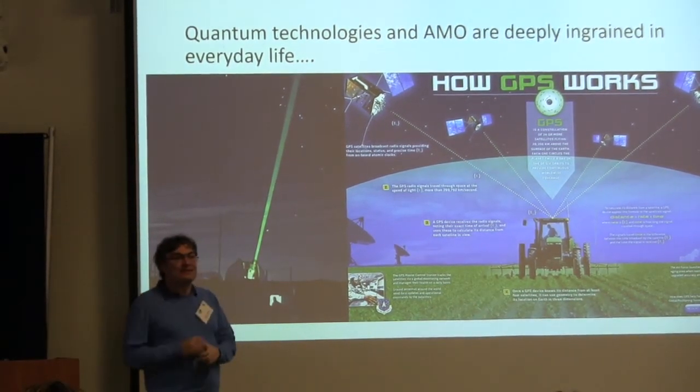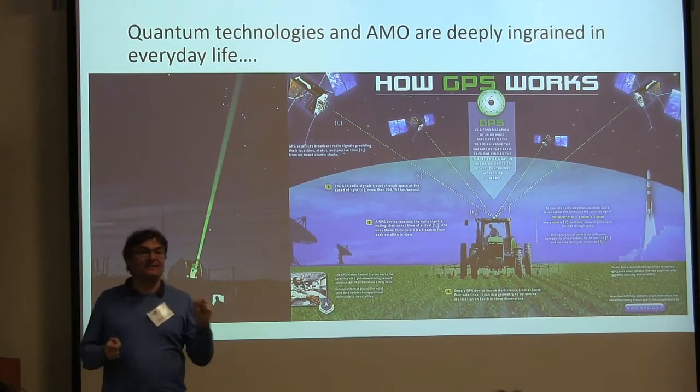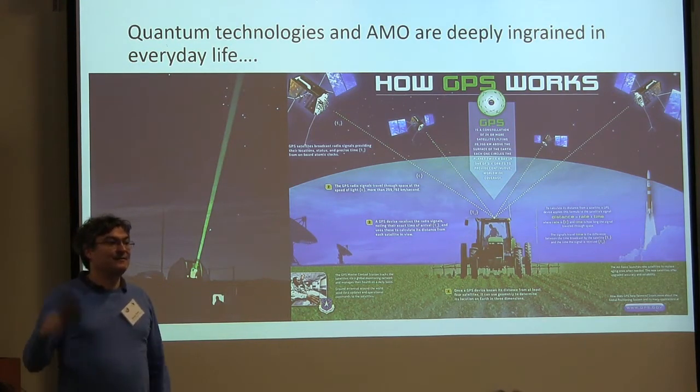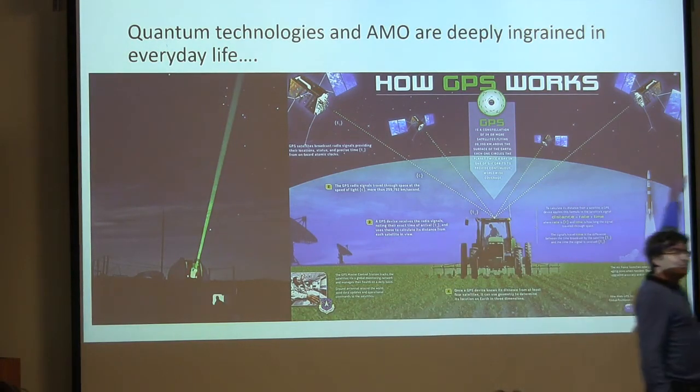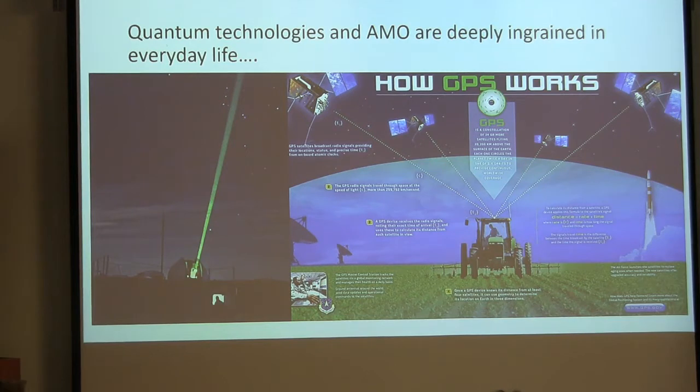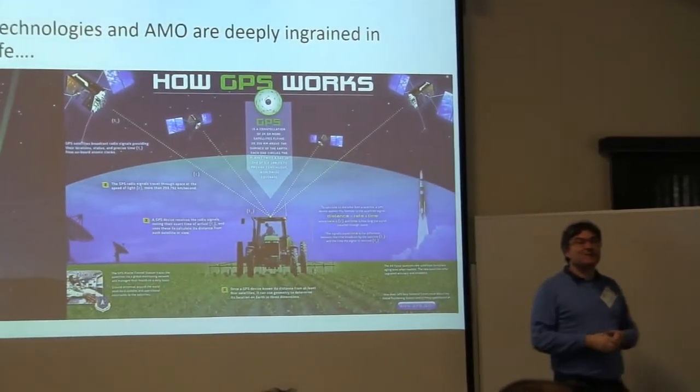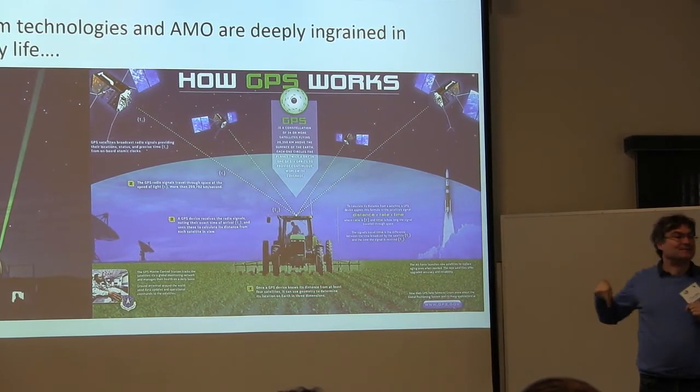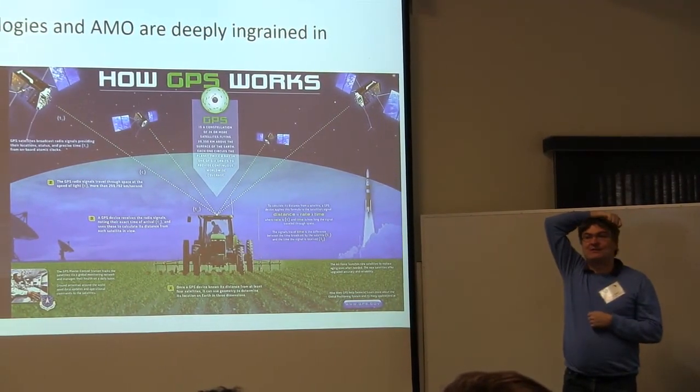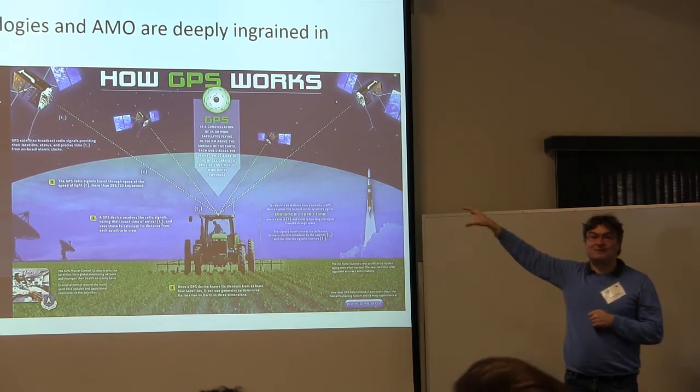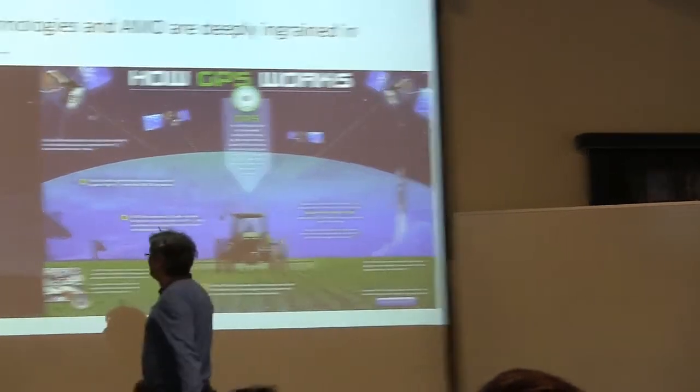There is a proliferation of atomic clocks that are so precise you can triangulate your position at the speed of light using GPS. Your cell phone does it. Everybody uses it all the time, and we're not even thinking that there are atomic clocks up there. This is how much atomic physics has to contribute to everyday life, and we should not be too arrogant to discount these things.